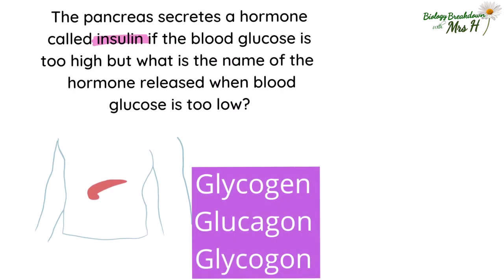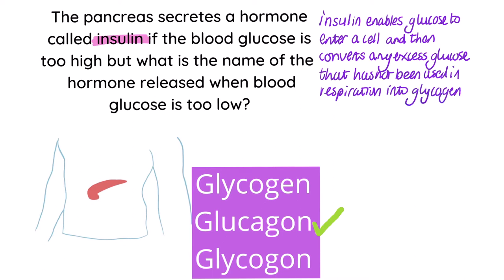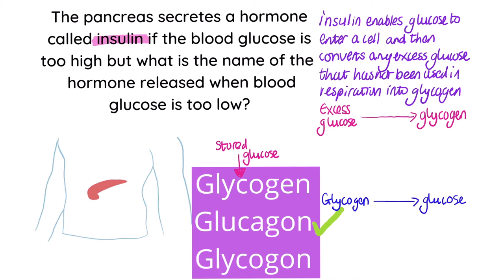The pancreas secretes a hormone called insulin if the blood glucose is too high, but what is the name of the hormone released when blood glucose is too low? Is it glycogen, glucagon, or glycogon? The correct answer is glucagon. Insulin enables glucose to get into the cell and converts excess glucose not used in respiration into glycogen, a stored sugar. Glucagon is the hormone that converts glycogen back into glucose. 'Glycogon' is a mix of the two words — it doesn't mean anything. Saying glycogen and glucagon out loud can help you remember the differences in their spellings.